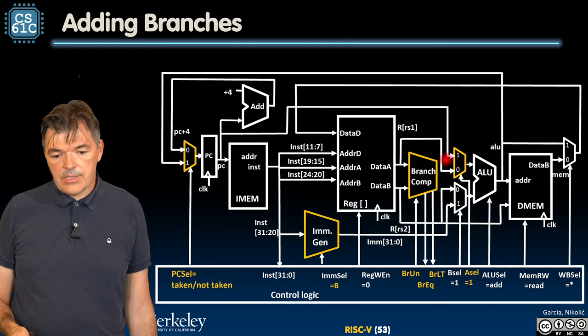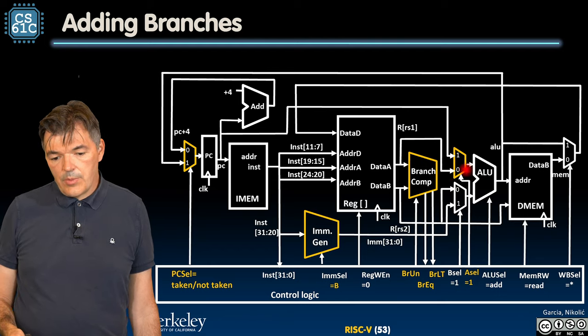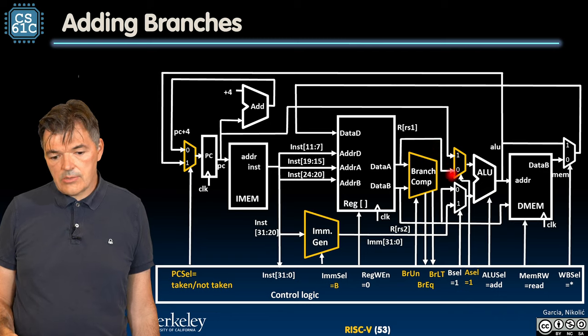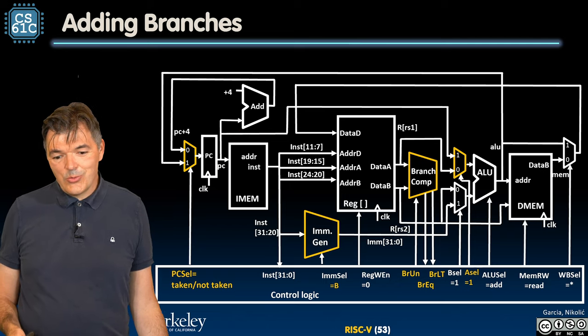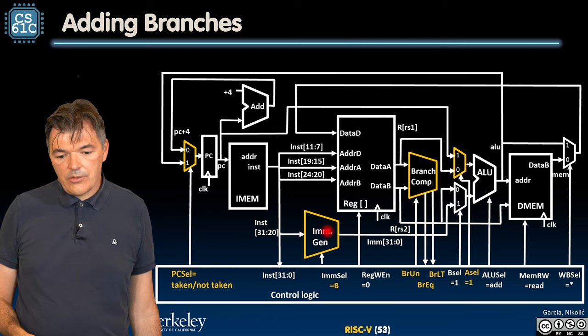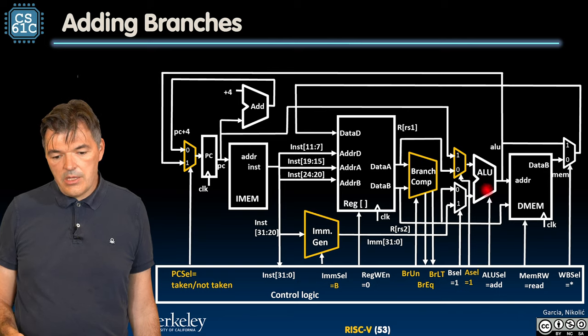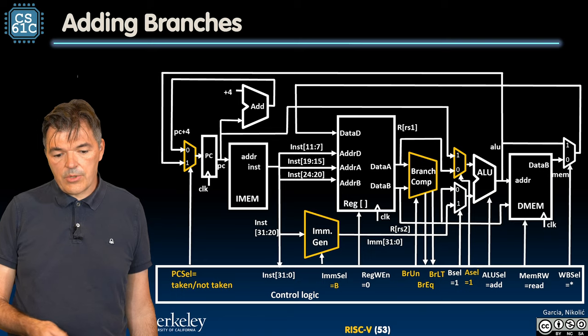And then we have one more multiplexer here in the data path. This multiplexer enables us to feed to the A port of the ALU, the top port of the ALU, either the RS1 contents, which is what we did before, or the program counter. So we are going to use the ALU to add the immediate value to the program counter. And we are going to take that output and write it back into the program counter.